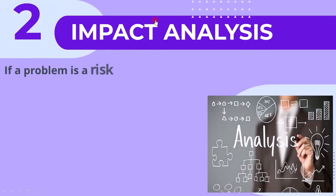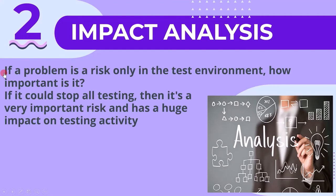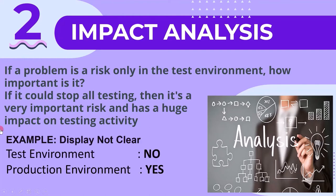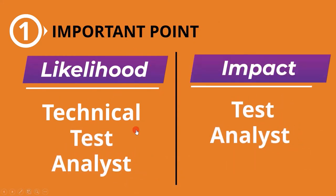After identifying where an issue can occur, we have to do an impact analysis. If a problem is a risk only in the test environment and it could stop all testing, then it's a very important risk with a huge impact. For example, if the display is not clear in the test environment but clear in production, the impact is less. Likelihood of occurrence is assessed by the technical analyst, whereas the impact of the issue is assessed by a test analyst.